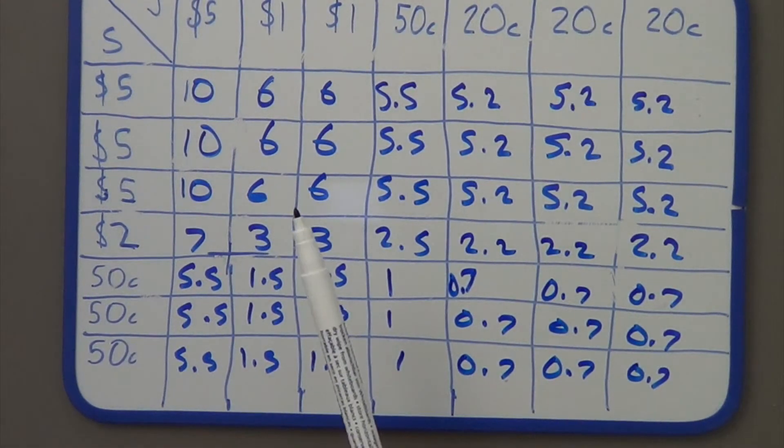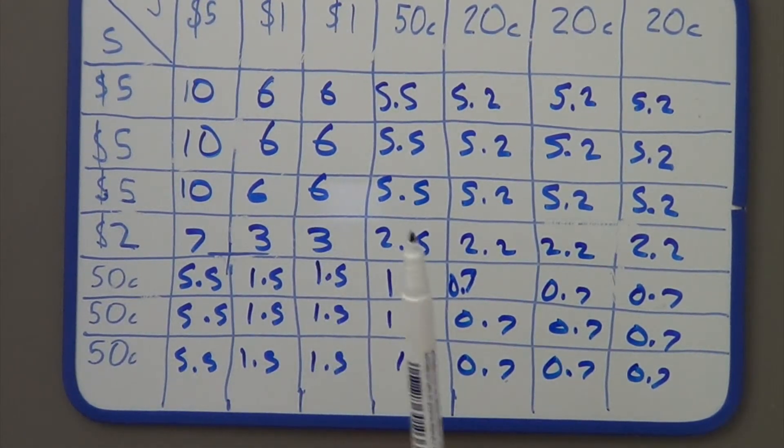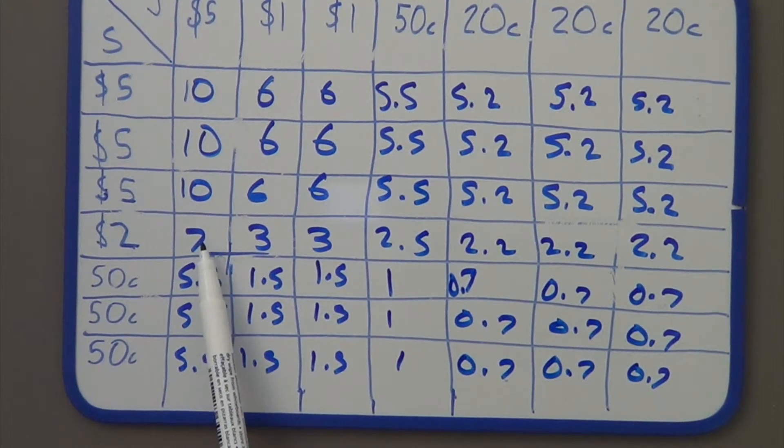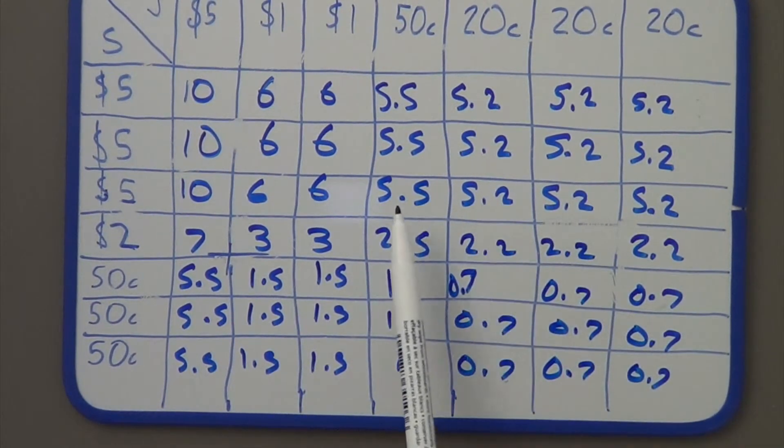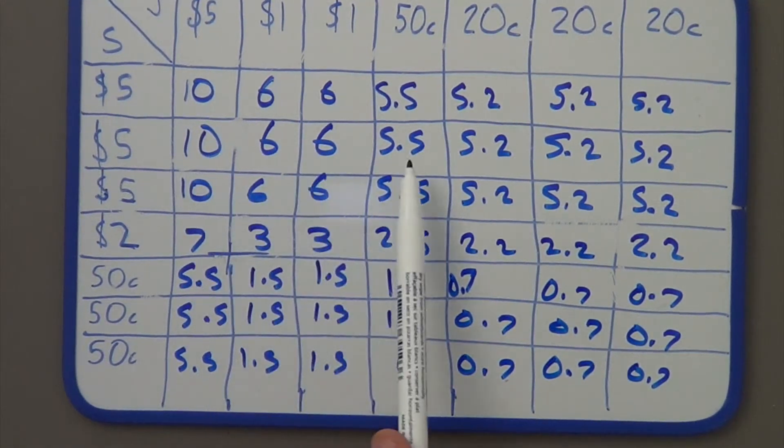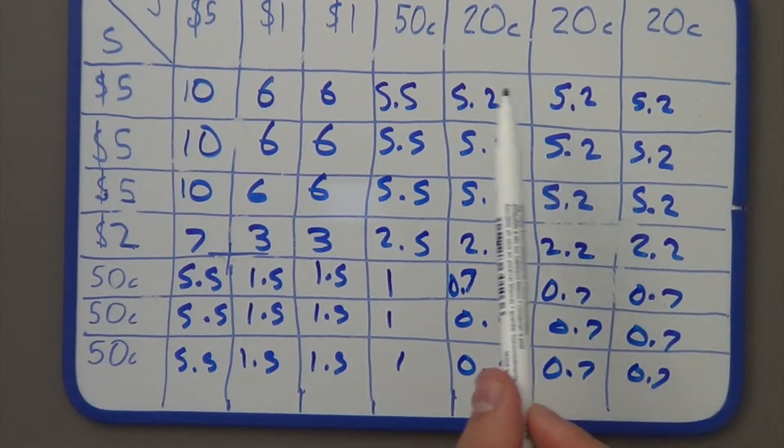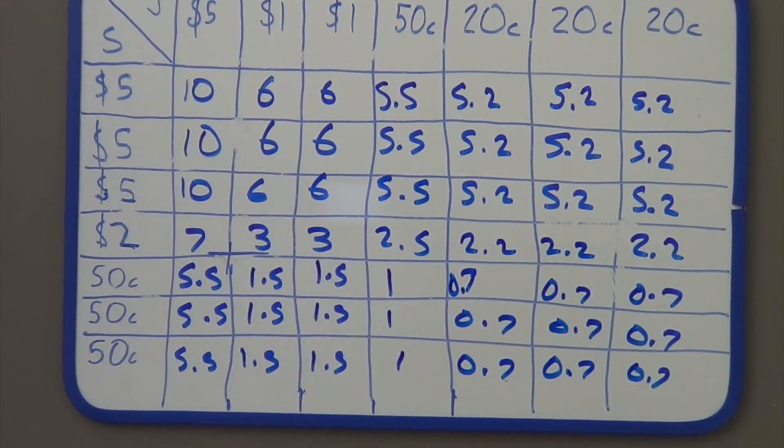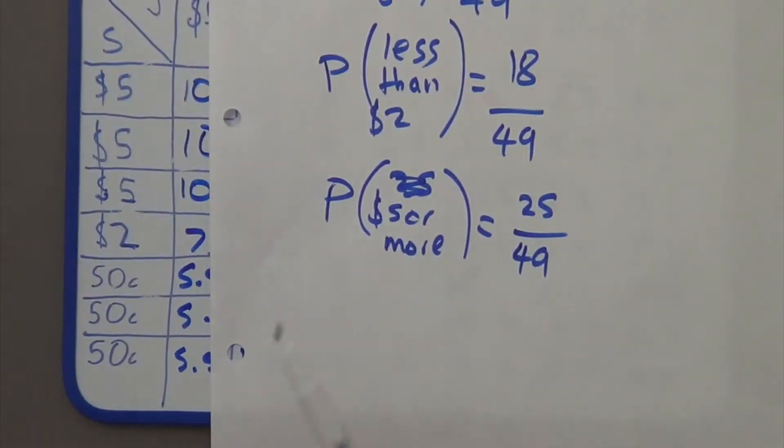Last one, what is the probability that the coins will add up to 5 dollars or more? Okay, so, let's have a look. We have 550 here. So, 1, 2, 3, 7 there, 4, 5, 6, 7, 8, 9, 10, 11, 12, 13, 14, 15, 16, 17, 18, 19, 20, 21, 22, 23, 24, 25. So, that means the probability that they are 5 dollars or more is going to be 25 over 49.